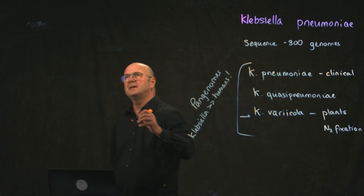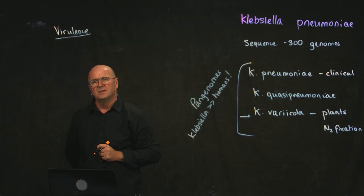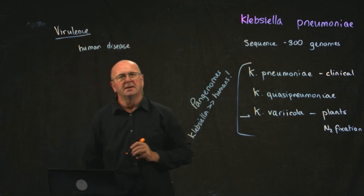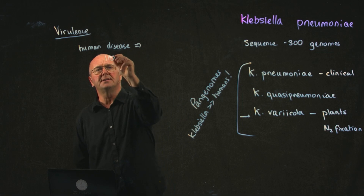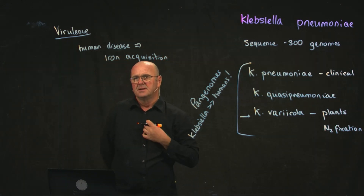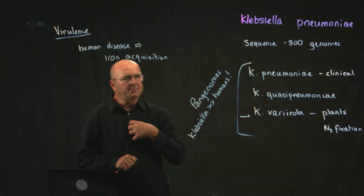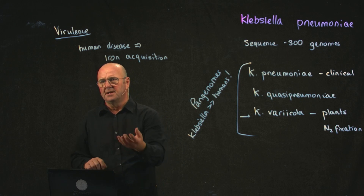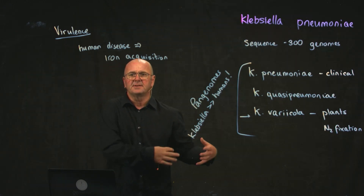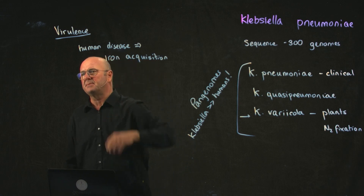They looked at the virulence of Klebsiella and found a couple of really neat associations. The first association they found is that human disease is really affected a lot by iron acquisition. We know this from a few other studies. The reason that your blood is red is because of iron — hemoglobin. Our bodies use that to take up oxygen. We have a lot of iron, and our bodies, for other things like bacteria that are trying to cause us harm, are quite iron-limited. So iron acquisition is really important for bacteria to cause human disease.